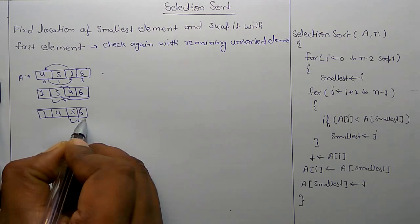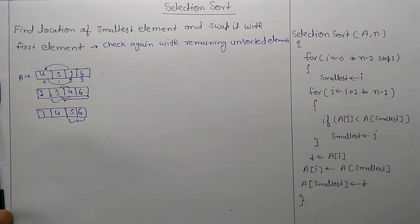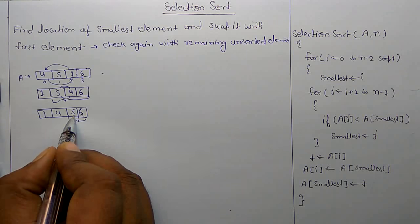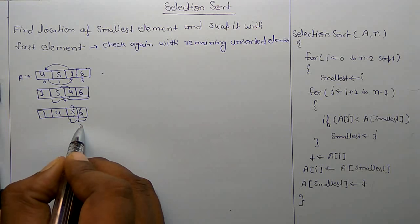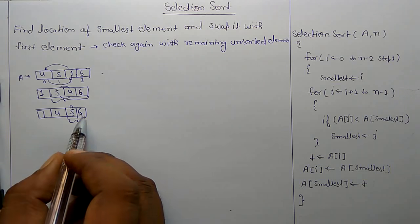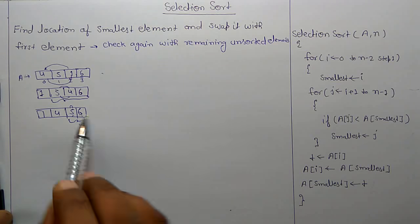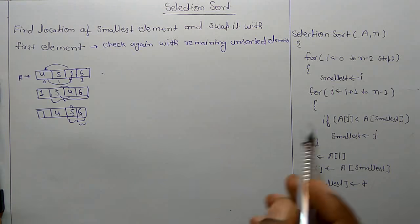Again, 5 and 6 is unsorted. So in 5, 6, 5 is the smallest and we keep it at the same place. And next, 6 is the smallest, 6 is the one element that is already sorted.